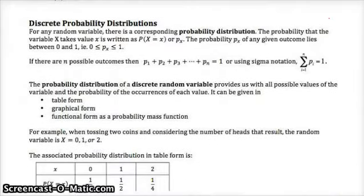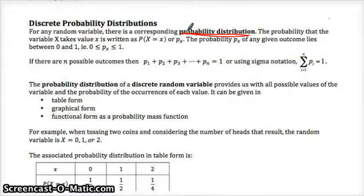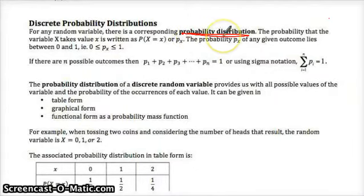Discrete probability distribution. For any random variable, there's a corresponding probability distribution. So you have the chance that you tossed a head — what is the probability that you would get two heads, or zero heads, or one head and one tail? So that could be put together as a probability distribution, which is what we're going to do below.